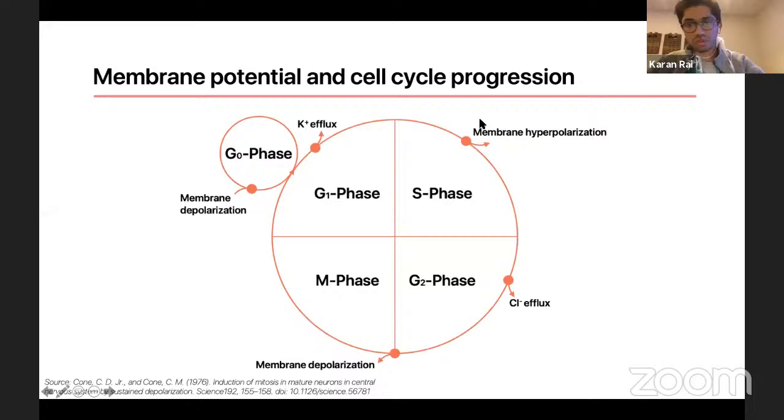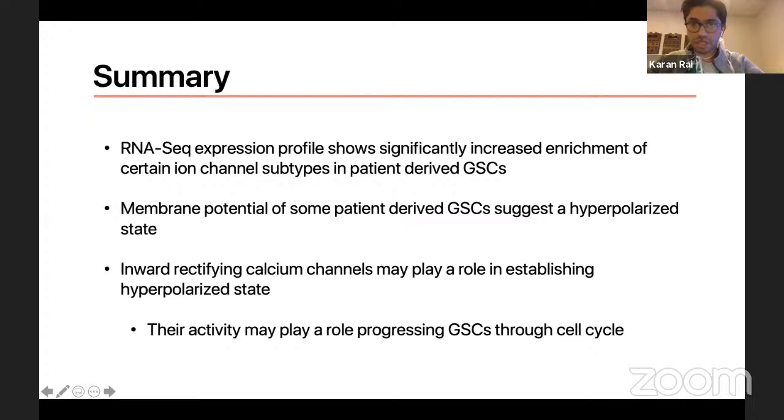And then this is a kind of figure I made that establishes the role of membrane potentials and their role in cell cycle progression. And a lot of this work was established by Dr. Cone in the 70s. So that kind of nicely illustrates where in this cell cycle, different membrane states occur.